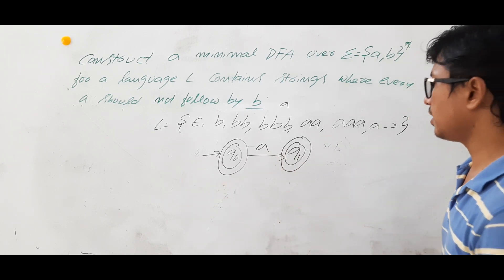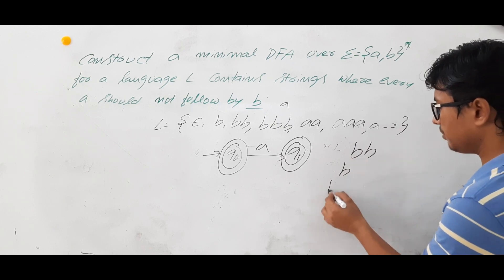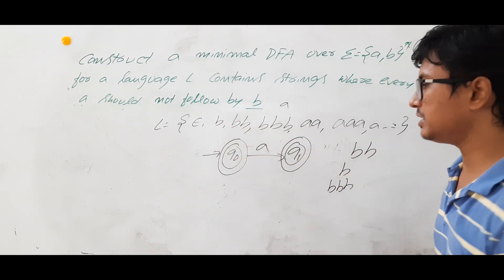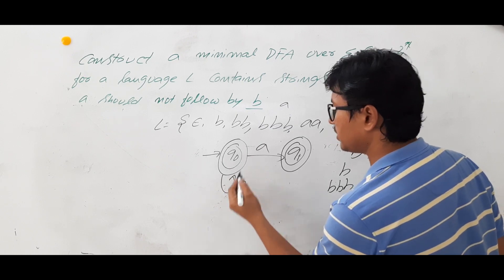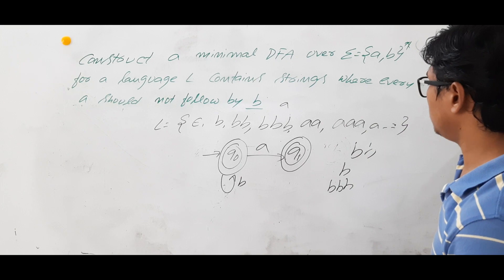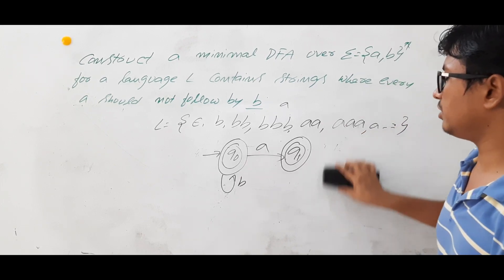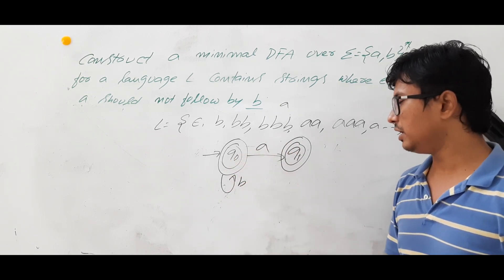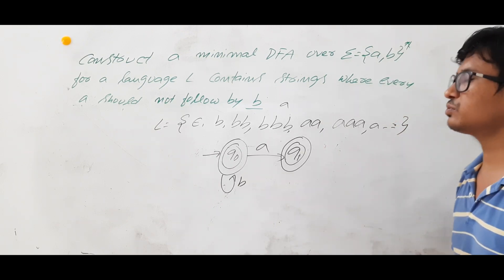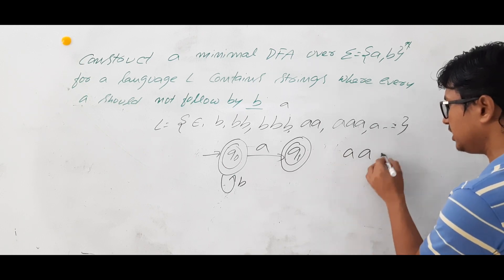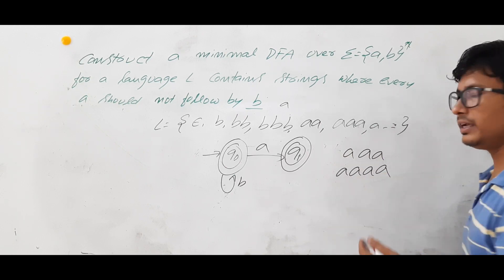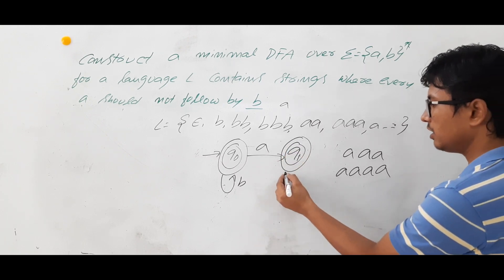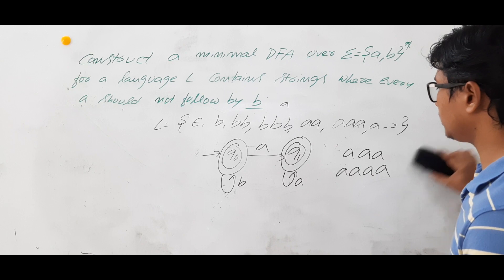Any number of Bs at the start should be accepted, so Q0 on B stays at Q0 itself. Now for Q1 on A: after a single A, any number of additional As can follow — that is still A not followed by B, which belongs to language L. So Q1 on A loops back to Q1 itself.